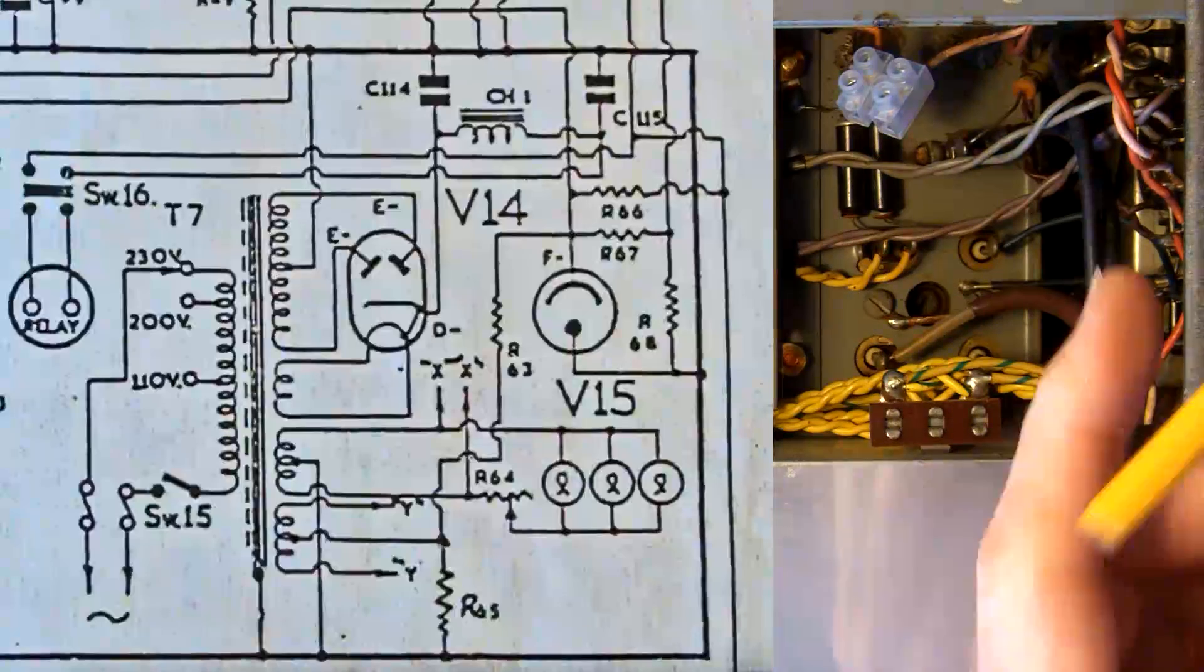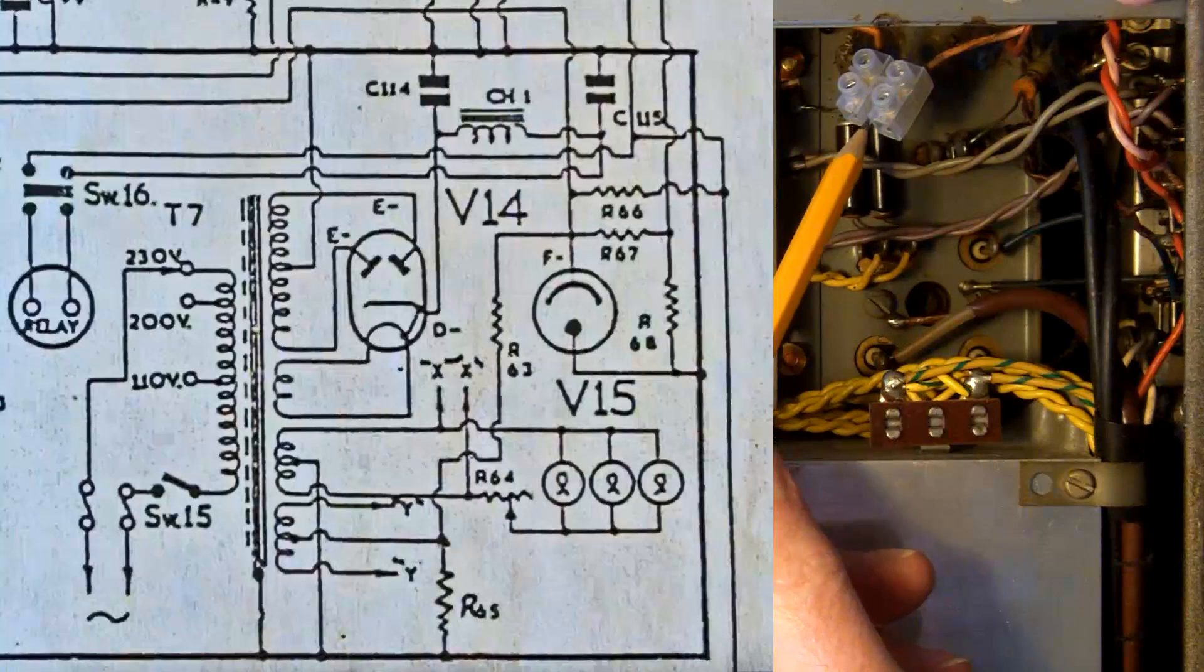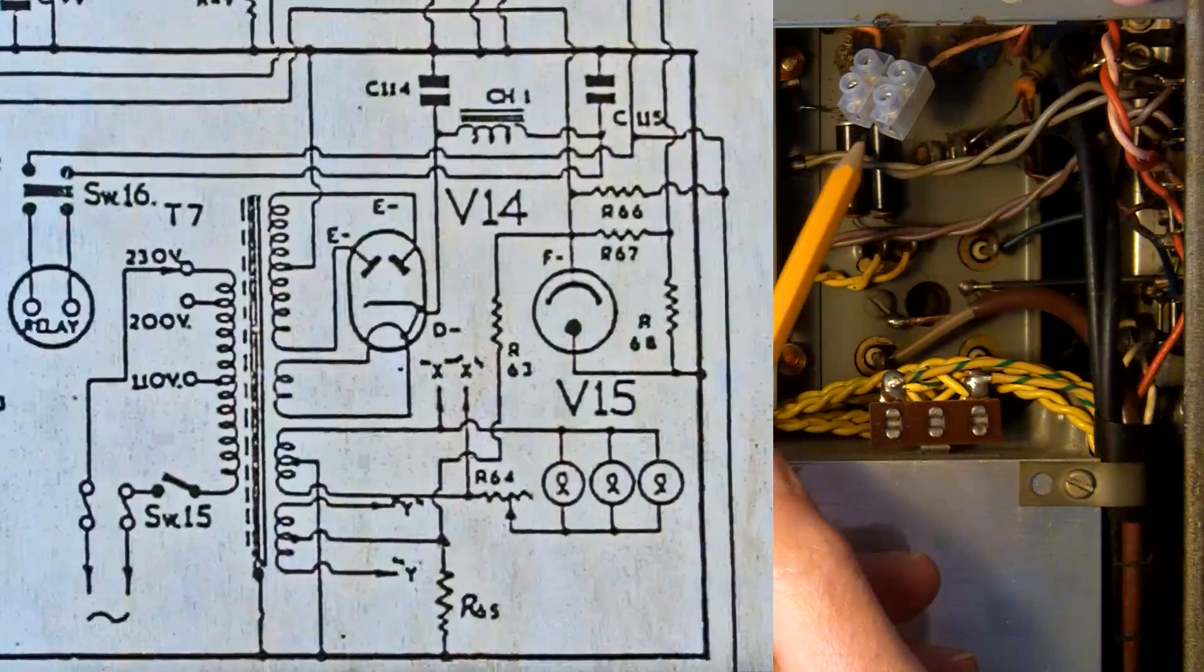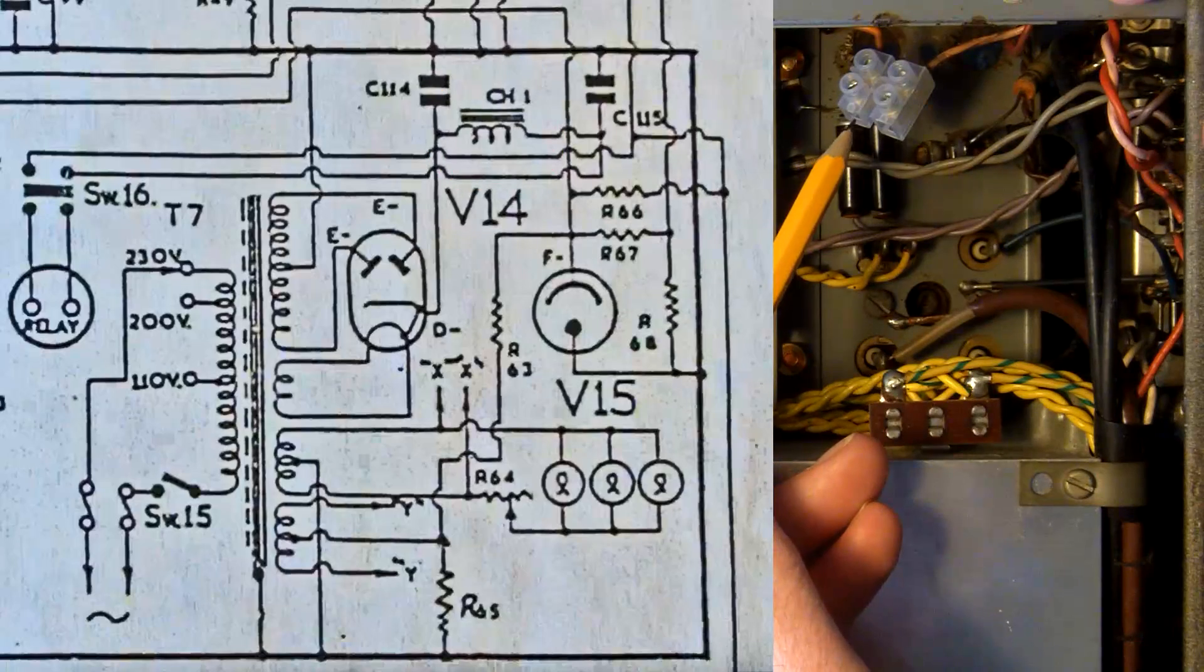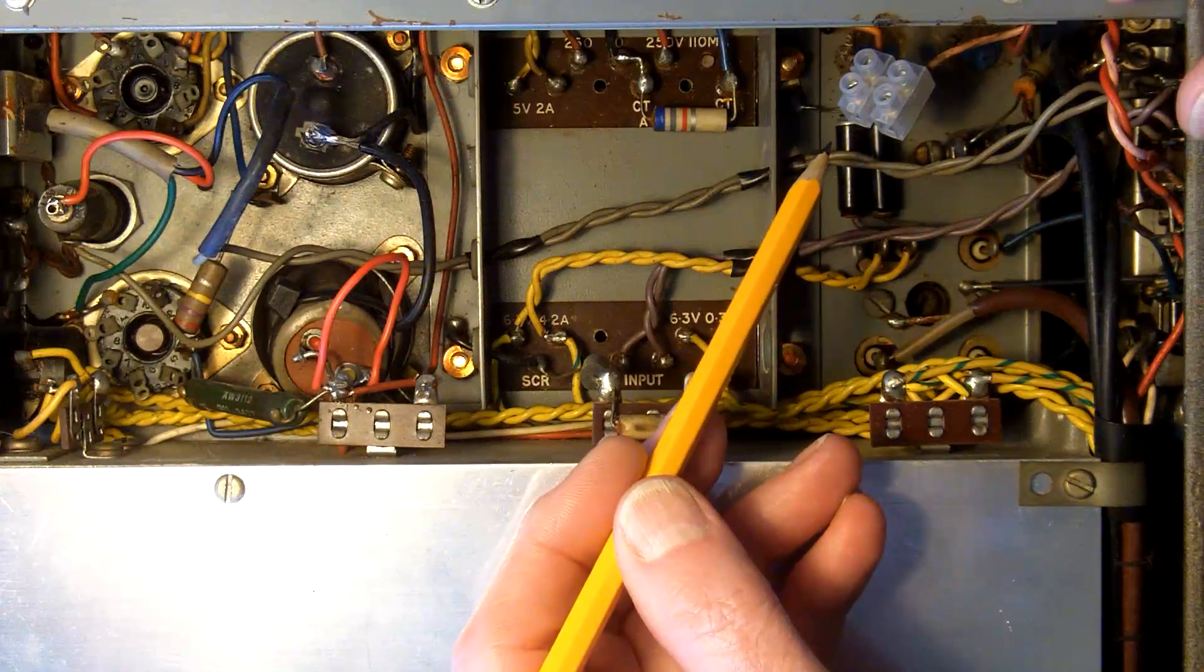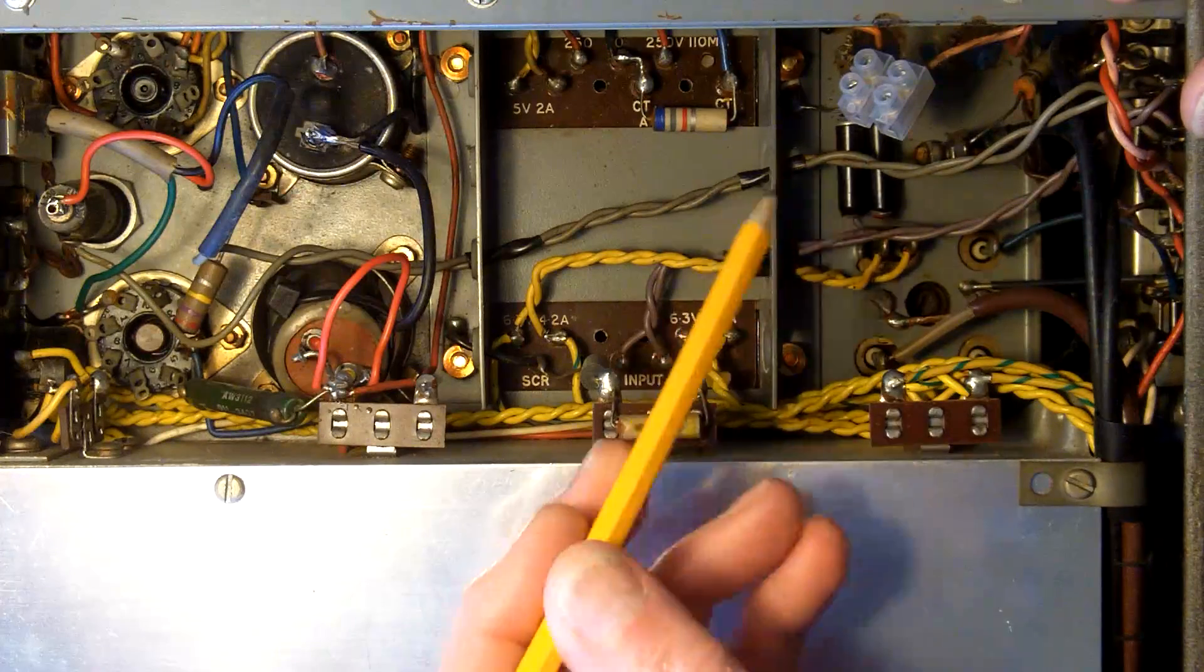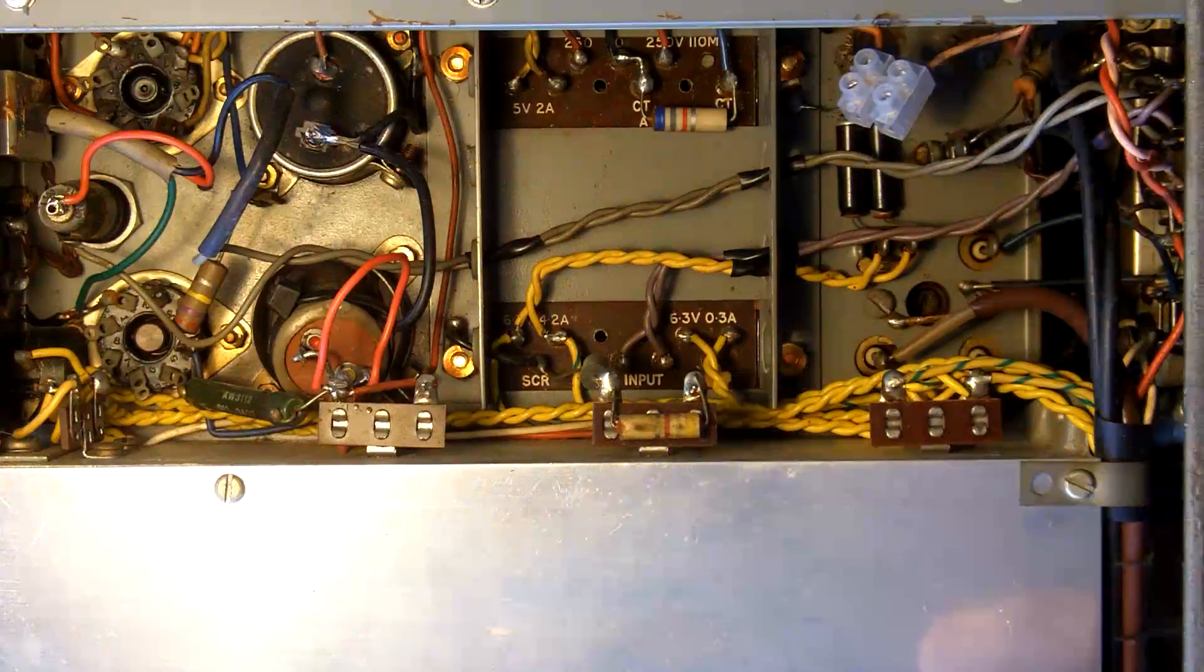I guess at this stage I need to show a circuit diagram, but this terminal block is where the choke would normally be in the circuit, so I'm about ready to put some mains on it now and just look at the output voltages of the mains transformer.